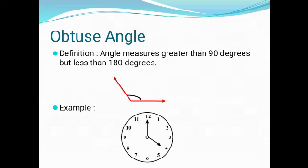Obtuse Angle: An angle which measures between 90 to 180 degrees is called an obtuse angle.